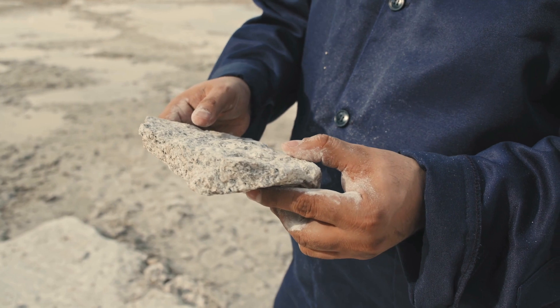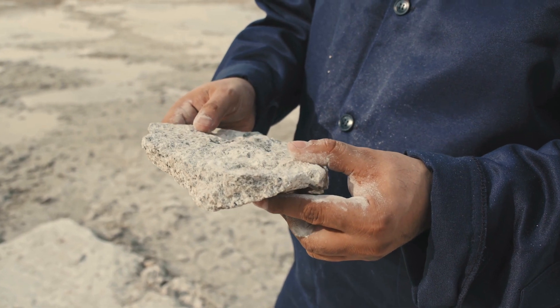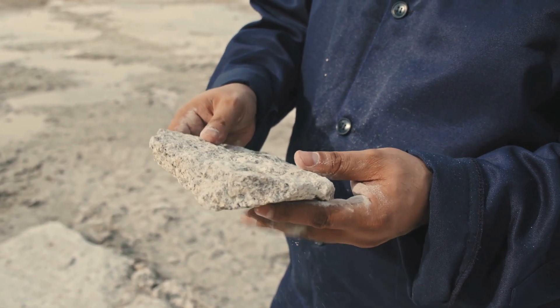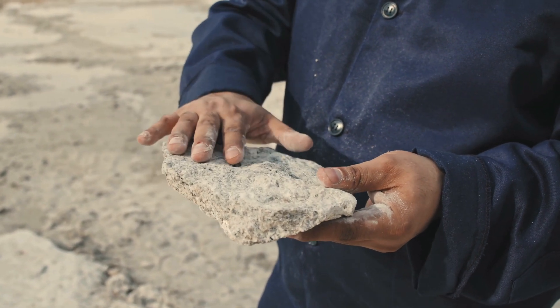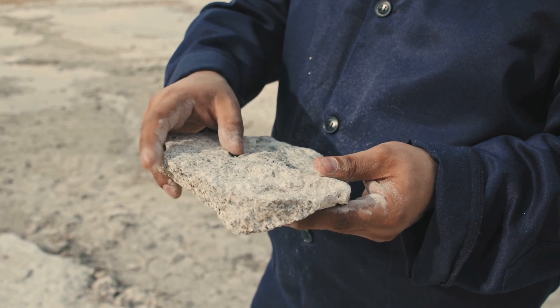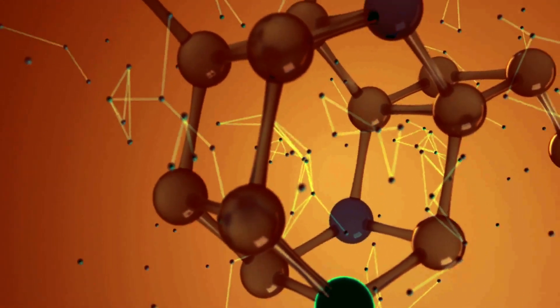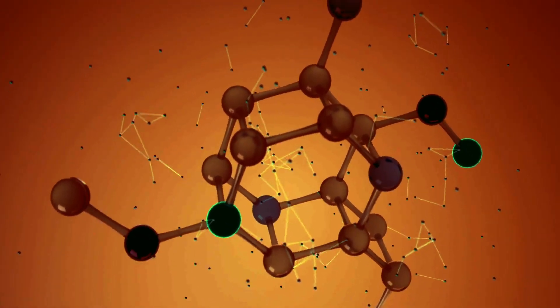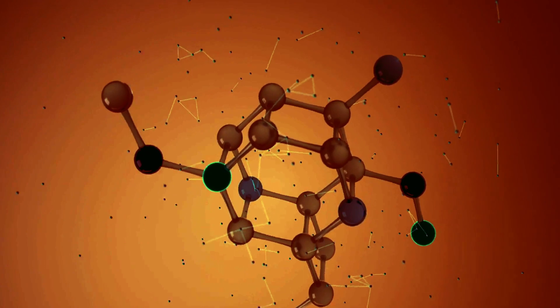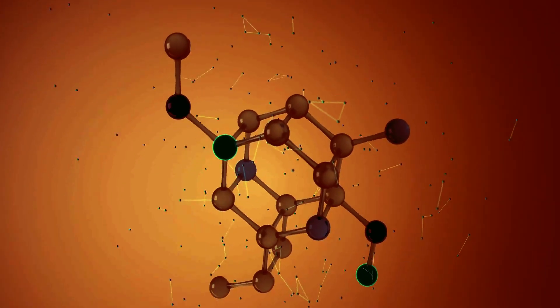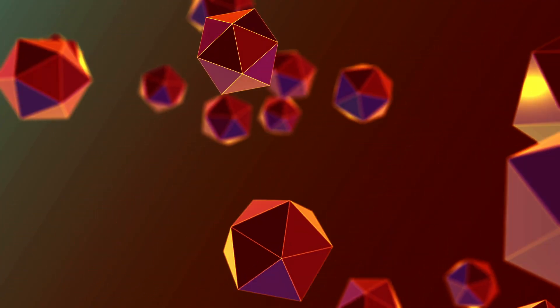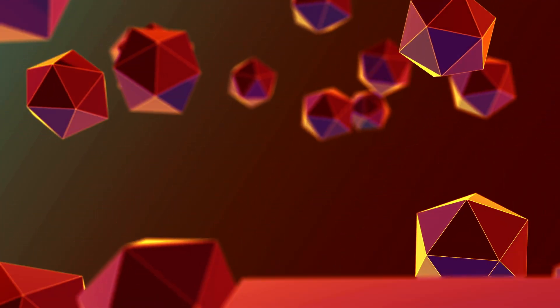Granitic magmas derived from the melting of sediments tend to have the highest concentrations of water. A silicate melt is basically a soup of randomly arranged ions and molecules, but as it cools the atoms arrange themselves into very neatly ordered structures that form mineral crystals.